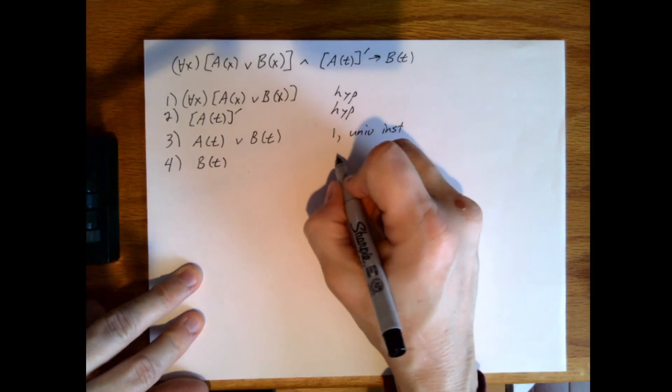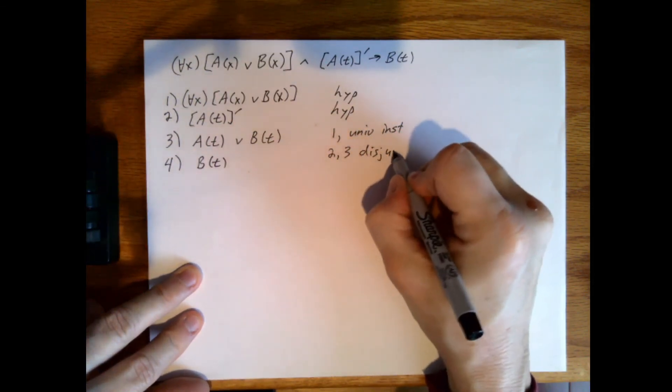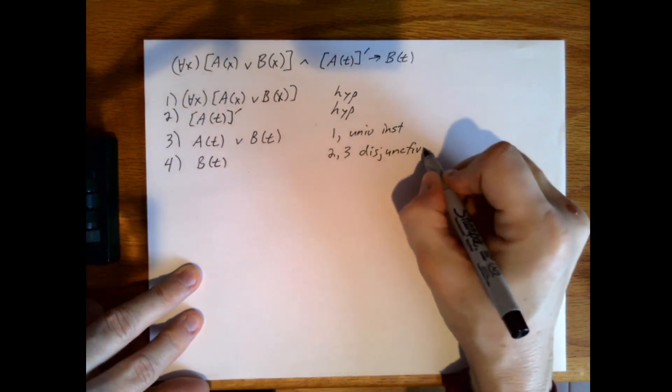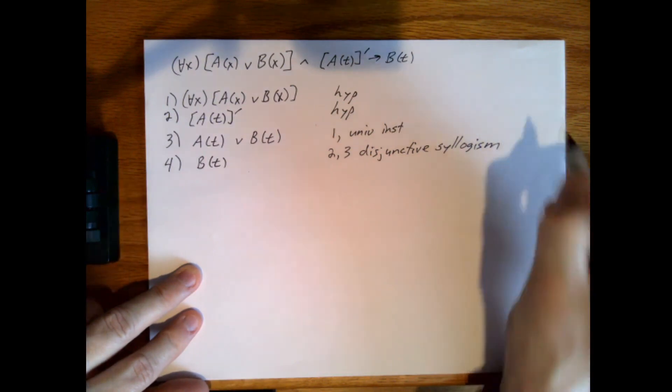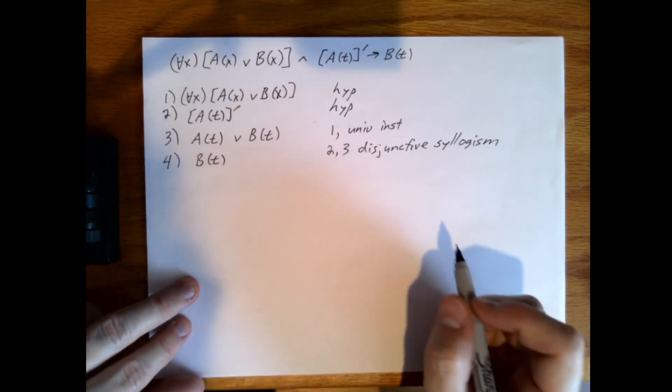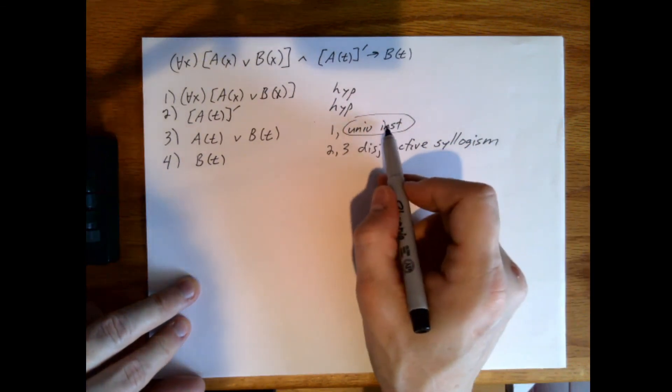So this would be two, three, just disjunctive syllogism, which came straight off the sheet. So this is what we introduce in this video: universal instantiation.